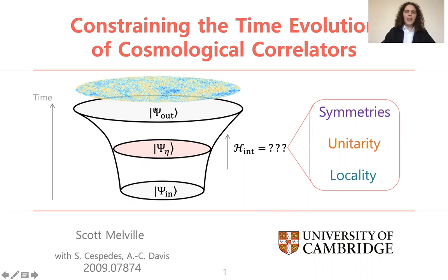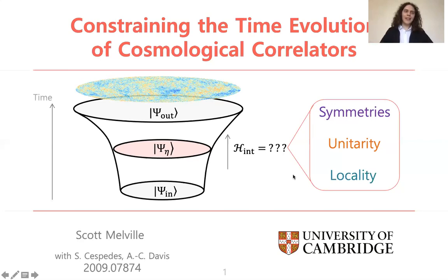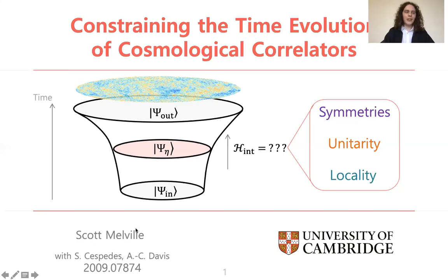Rather than specifying some explicit inflationary model, our goal here is to assume only very basic properties about this interaction Hamiltonian, like space-time symmetries that it might have, that it's unitary, and that it's local. A number of us have been working on very similar lines, and as a community we've made really remarkable progress in the last few years. I'm going to cherry-pick some of the main results from this paper, which I wrote last year with Sebastian Cespedes and Ann Davis.